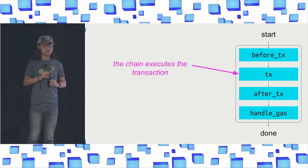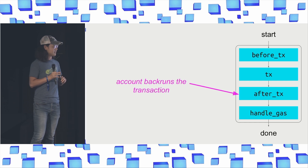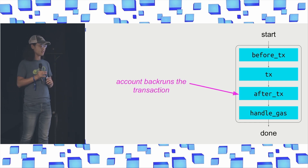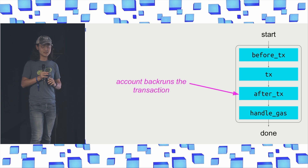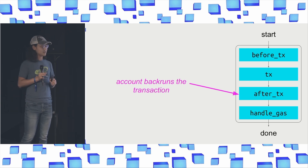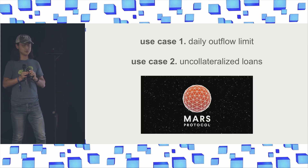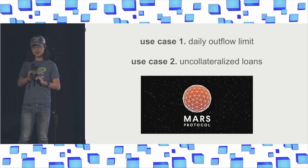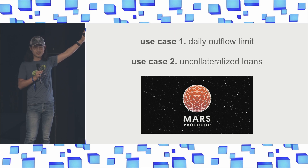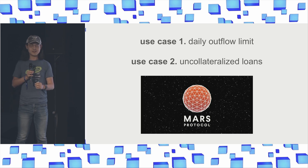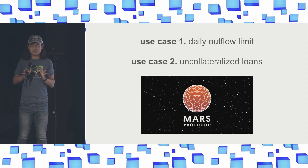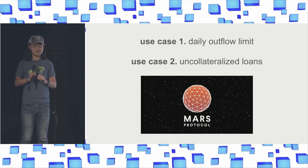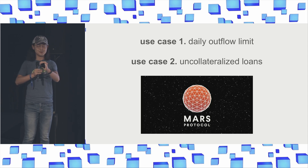After the before-transaction step, we execute the transaction. Then comes our second major innovation: we call back into the account contract with a special method called 'after transaction,' and the account can do whatever it's programmed to do. This opens many possibilities. One example: you can set a daily outflow limit. In the before-transaction function, you calculate the total value of your account; in the after-transaction function, you calculate it again. If the value decreases too fast, you reject the transaction. Implemented correctly, this can prevent the majority of hacks — your account simply doesn't allow its own value to drop too fast.